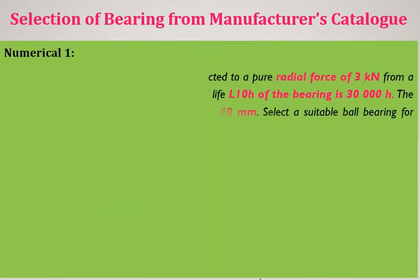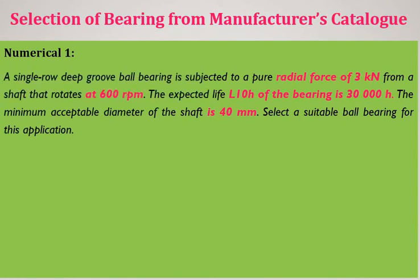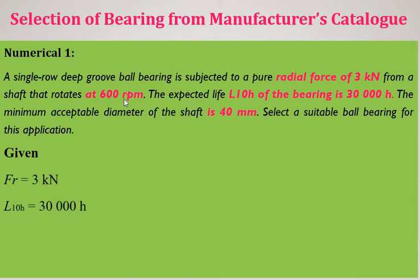Let us solve two problems. Numerical 1 is straightforward — illustrating X and Y factor calculation. A single row deep groove ball bearing is subjected to a pure radial force of FR = 3 kN (3000 N) from a shaft rotating at 600 RPM. The expected life is 30,000 hours and the shaft diameter is 40 mm.